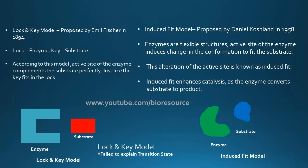The lock-and-key model was proposed by Emil Fischer in 1894. This model assumes the enzyme as a lock and the substrate as a key. According to this model, the active site of the enzyme complements the substrate perfectly, just like a key fits in the lock. Because of this complementarity, enzyme-substrate binding occurs.